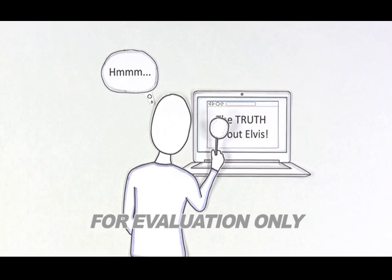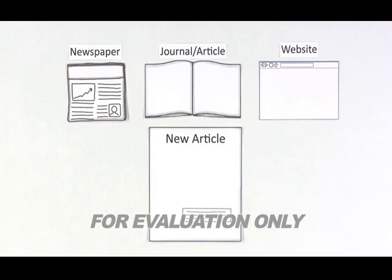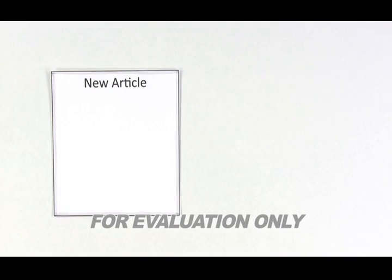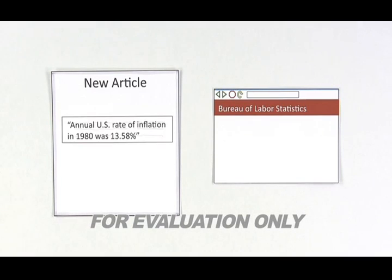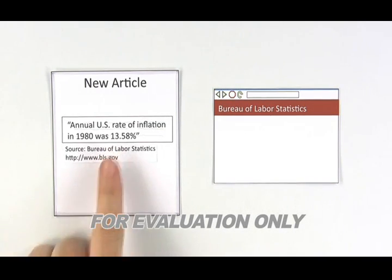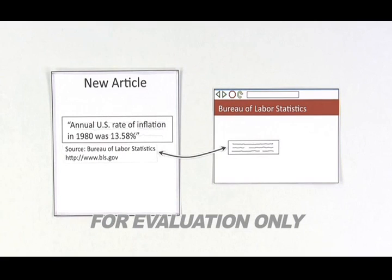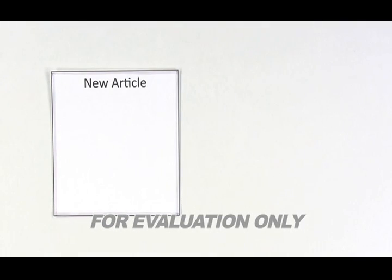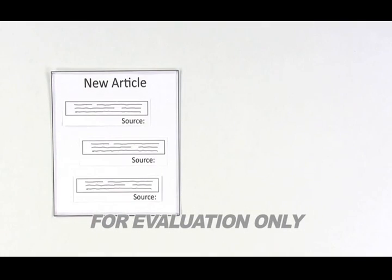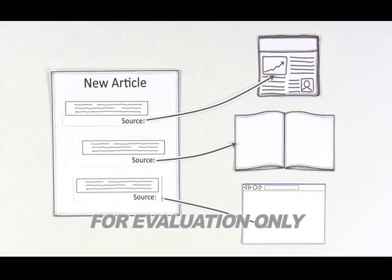Here are some things to consider. Editors and journalists often depend on existing facts and information in their work. When an article states something as a fact, like the annual rate of inflation in 1980 was 13.58%, that information can be sourced from the U.S. government. And that source matters. If an article names high-quality sources of facts along with the article, it's a good sign.